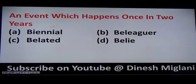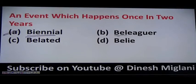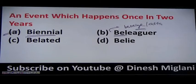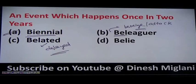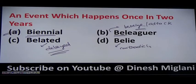An event which happens once in two years is said to be biennial, B-I-E-N-N-I-A-L. Beleaguer, B-E-L-E-A-G-U-E-R, means to besiege or attack — to surround someone with armed forces. Belated means delayed — for example, a belated happy birthday means you forgot someone's birthday. Belie, B-E-L-I-E, means to contradict or give a false impression.